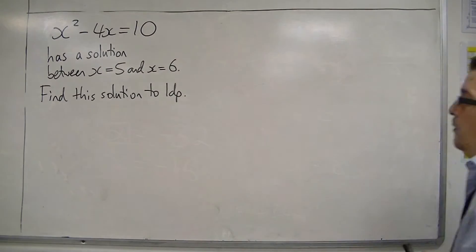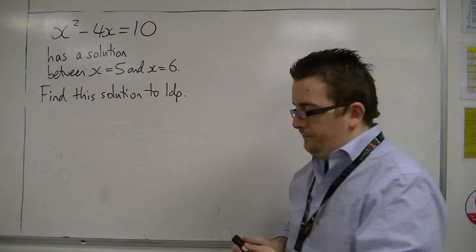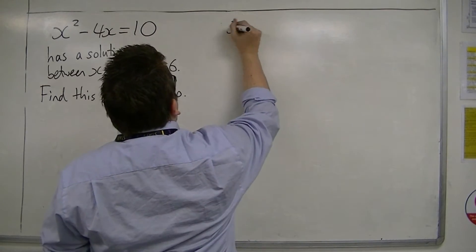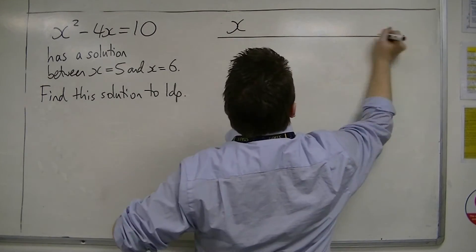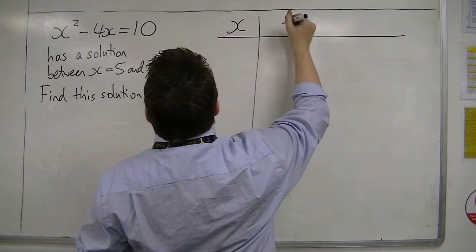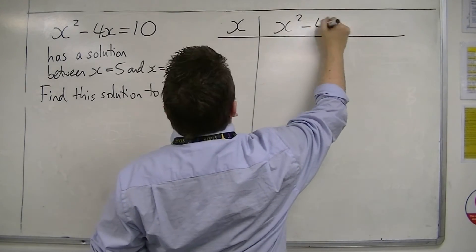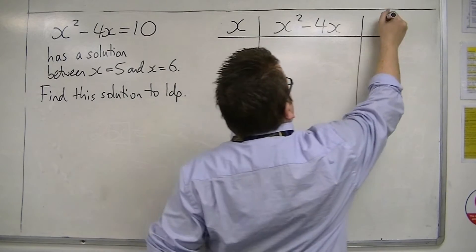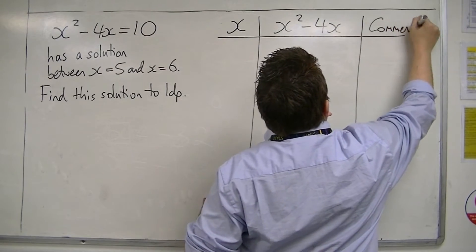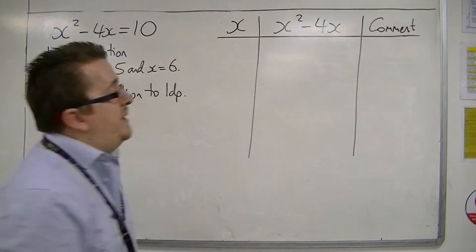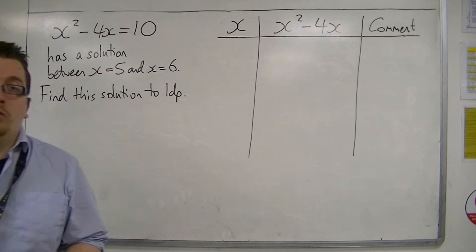So what we're going to do is set it up in a table. We're going to have our x's, we're going to have what we're substituting into and what we get, and we're going to have a comment. Because our answers are either going to be too big or too small, which I will show.